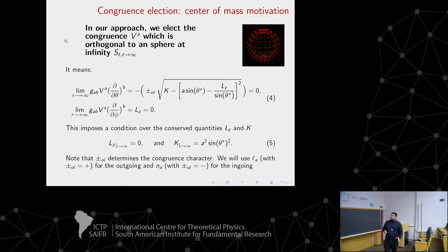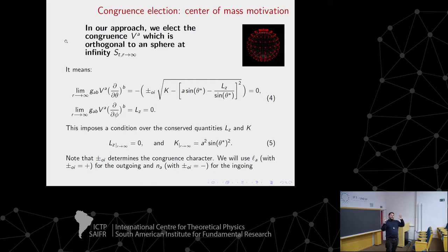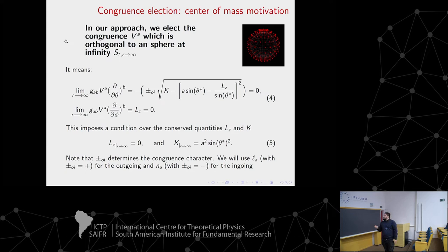We were inspired by the center-of-mass definition. The idea is: we take a sphere at infinity - we go to R to infinity and take a huge sphere. From all the null congruences, we elect the one whose null rays reach that sphere at infinity orthogonally. So we have a sphere at infinity and the null rays reach it orthogonal to that sphere. If we impose that condition, this imposes a condition on the constants of motion: L must be zero, and capital K takes the value at the sphere at infinity.